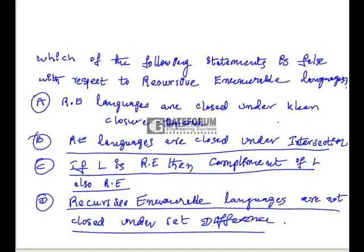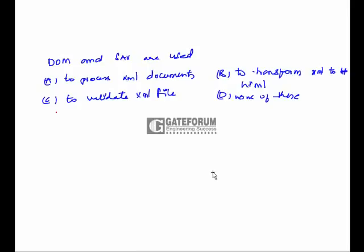Option A is a true statement because recursive enumerable languages are closed under Kleene closure. Option B is also a true statement — recursive enumerable languages are closed under intersection. We need the false statement. Option C says if L is recursive enumerable then complement of L is also recursive enumerable — this is wrong. Option C is the correct (false) answer, because the complement of a recursive language is recursive, but complement of a recursive enumerable language is not necessarily recursive enumerable. If both L and its complement are recursive enumerable, then L must be recursive. Option D is also a true statement.